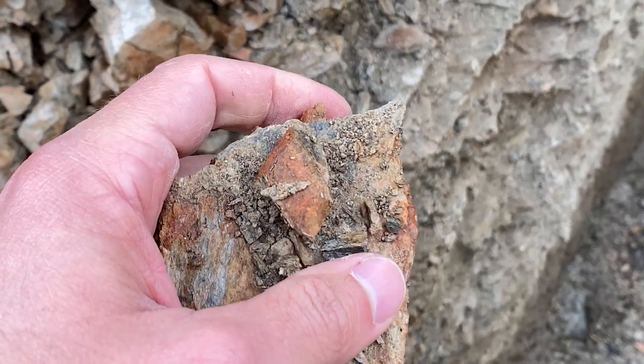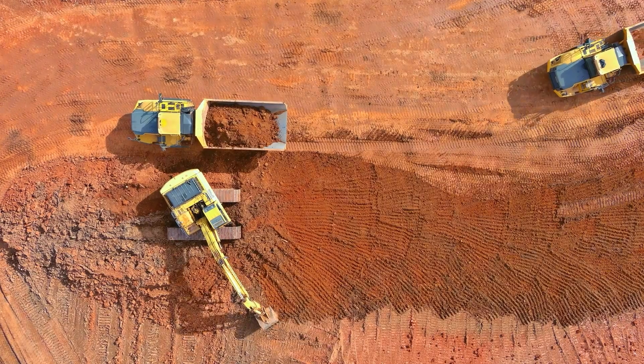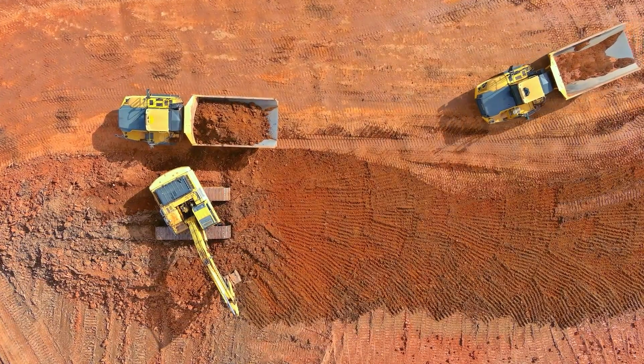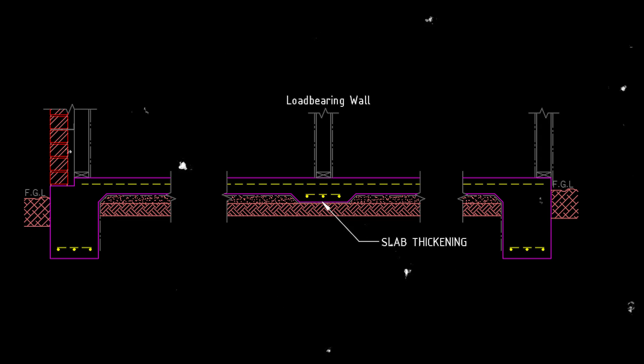The reason you can omit the internal ground beams here is that this system is used only for class A and S sites where the foundation consists of sand, rock, or slightly reactive clays. Hence, you don't need as much stiffness to withstand soil movement. Bear in mind that you might need thickenings for internal load-bearing walls or bracing walls.